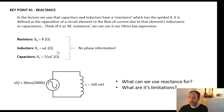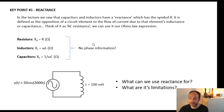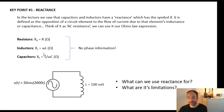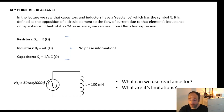For a resistor, the reactance symbol is X and it's just equal to the resistance in ohms. For an inductor, the reactance X equals omega (the angular frequency in radians per second) times the inductance. So if we're operating at 100 radians per second with a 100 millihenry inductor, the reactance is 100 milli times 100 = 10 ohms. For a capacitor, the reactance equals one over omega C.